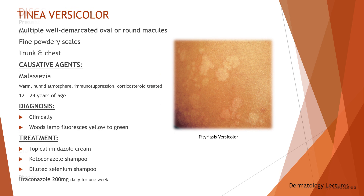Tinea versicolor commonly presents with multiple well-demarcated oval or round macules covered in a fine scale, mainly over the trunk and chest. These can be pale and become more obvious after tanning of surrounding skin on exposure to the sun. Sometimes they can be dark in color. It is caused by malassezia, a fungus that is normally present and symptomless on human skin. Patients are usually otherwise healthy, but a warm humid atmosphere, immunosuppression, treatment with corticosteroids, and the application of oily preparations can be factors in its development. It commonly occurs when sebaceous glands are more active, between 15 and 24 years old, but is rare in the elderly.